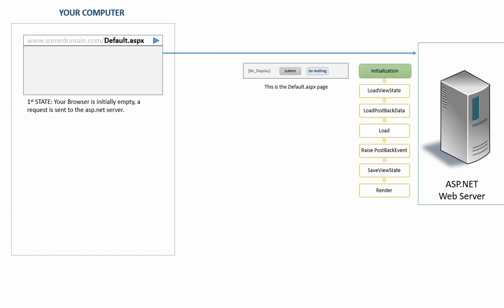When the request is received by the ASP.NET web server, first the requested ASP.NET web form will be initialized with its web controls. We have a very simple web form here with a label and two buttons positioned next to each other. The next two events will take place only if this is a postback request. So what is a postback request? A postback request is any request to the ASP.NET server after the first time the page is requested by the browser. For example, after a page is loaded in a browser, the user may click on a button, which will result in a postback request on the server side. We are requesting the page the first time, therefore this is not a postback request and these two events will not take place.